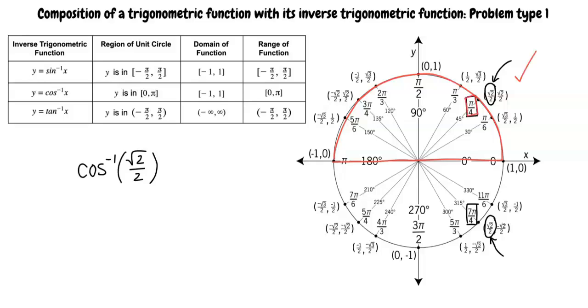It is also important to note that inverse trigonometric functions may be written as cosine inverse or arc cosine. Both forms represent an inverse function. Now let's do an example.